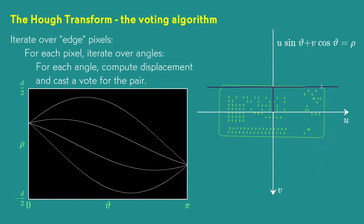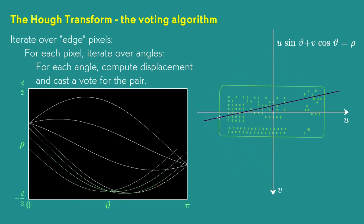A selection of points on the left edge of the card again gives us multiple votes at the point corresponding to the formula for that edge. And the right and top edges also give us lots of votes at the points corresponding to their line formulas.